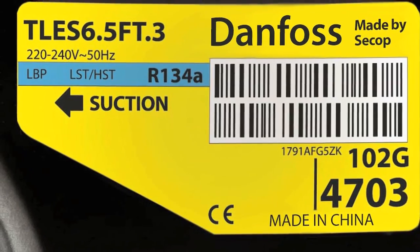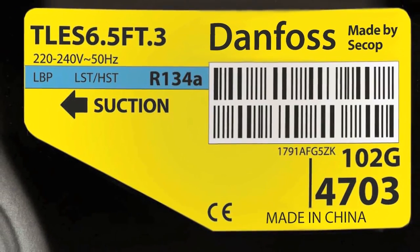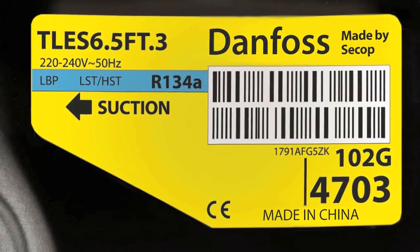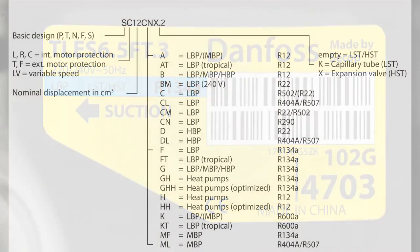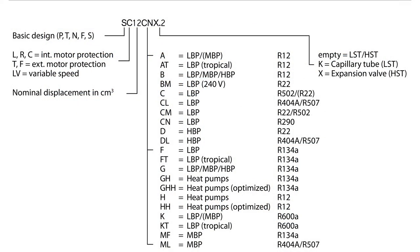Another method used to define a specific compressor is the Danfoss part number. To begin, here is an example of the nomenclature used for the fractional series compressors.